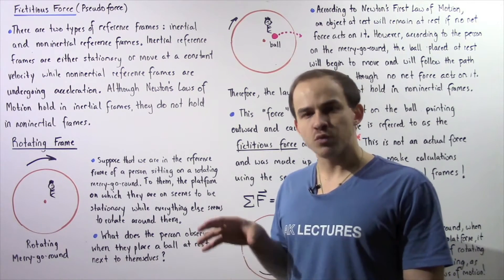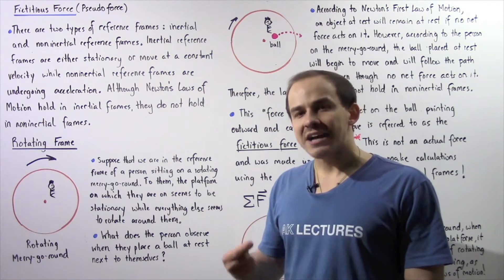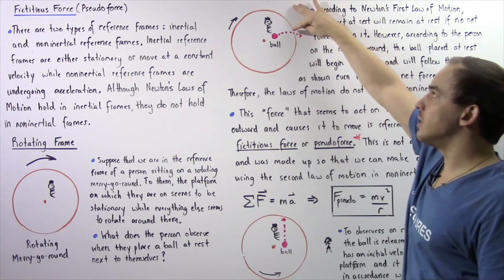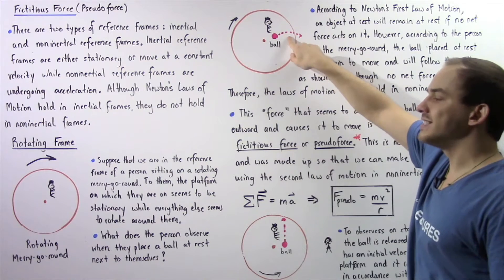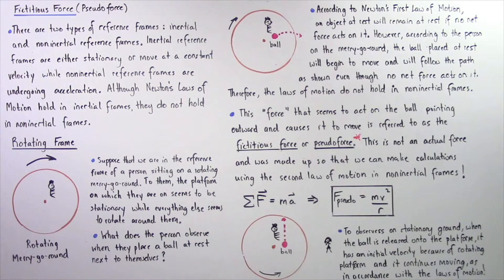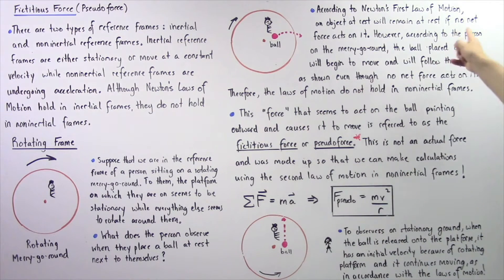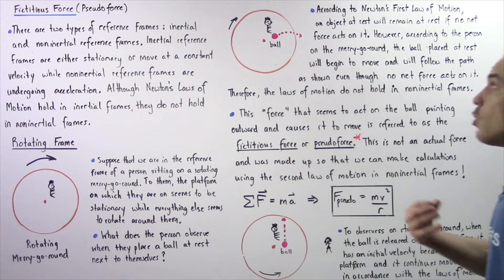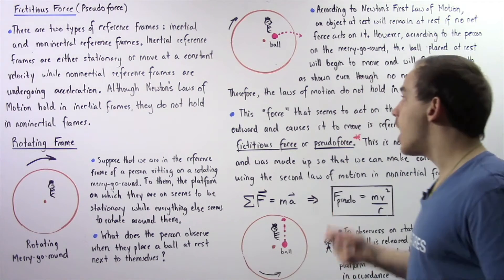However, what the person actually observes is that when they release that ball, it will move along a curved pathway as shown by this dashed region. So according to Newton's first law, an object at rest should remain at rest if no net force acts on it. However, according to the person on the merry-go-round, the ball placed at rest will begin to move and follow the path outlined by this dashed line, even though no net force actually acts on that object.